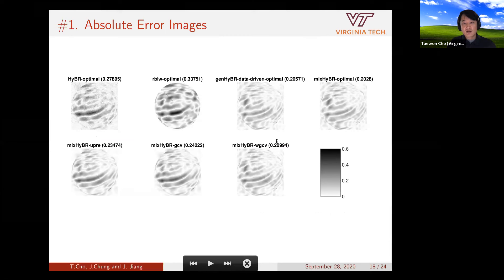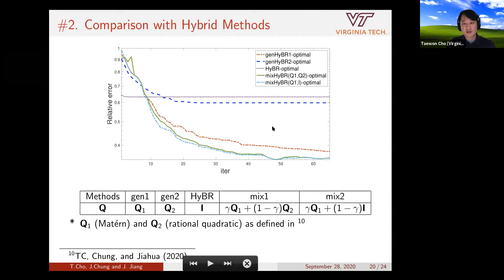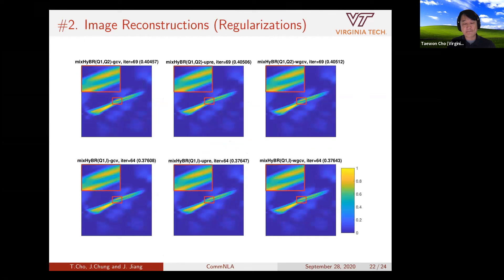The second example is when we don't have a training set. We used seismic tomography for this case. The results show that using the mixed hybrid — both mix one and mix two variants — performs better than using just one covariance matrix. The reconstructions for the optimal case and for the GCV and WGCV variants are also shown.